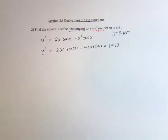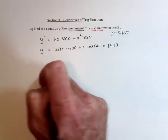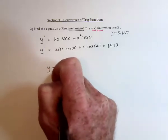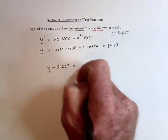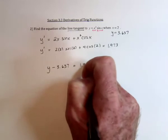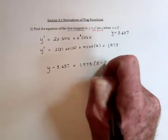Okay, then use the point-slope formula, which is going to look like y minus the y value is equal to slope, times x minus the x value.